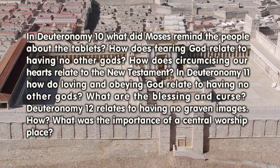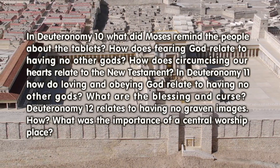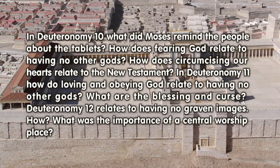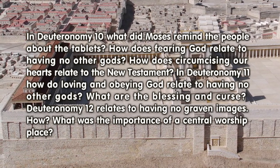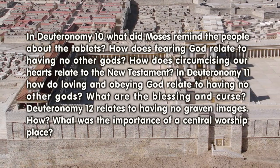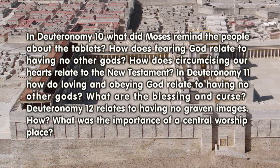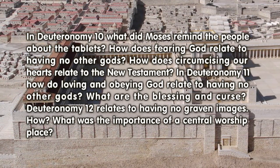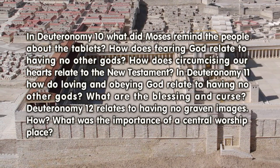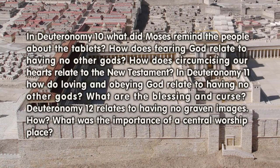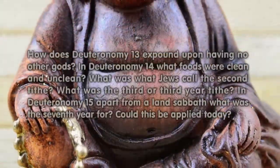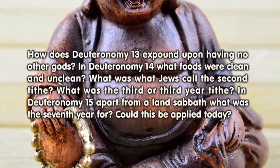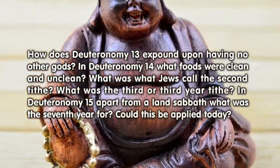What are the blessing and curse? Deuteronomy 12 relates to having no graven images — how? What was the importance of a central worship place? How does Deuteronomy 13 expound upon having no other gods?